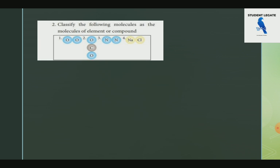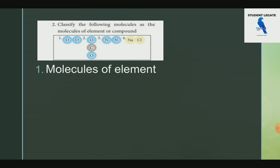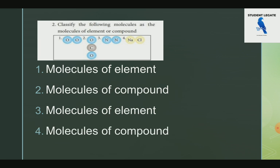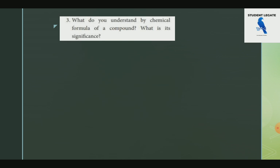Classify the following molecules as a molecule of a compound or a molecule of an element. Oxygen (O2) is a molecule of an element. Oxygen and Carbon together form a molecule of a compound. Nitrogen (N2) is a molecule of an element. NaCl and CO2 are molecules of compounds.